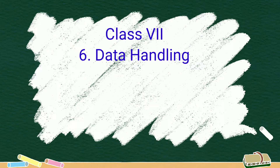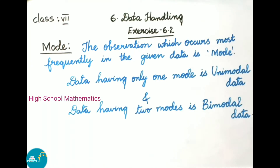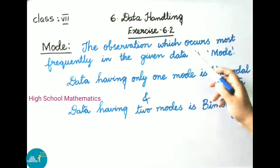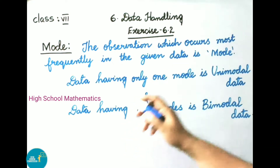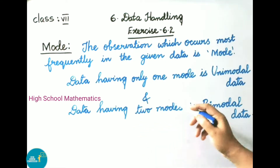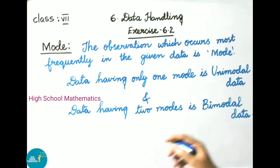Hello everyone, welcome to High School Mathematics channel. Today we are going to learn Class 7 Chapter 6: Data Handling, Exercise 6.2. First, let us see the definition of mode. The observation which occurs most frequently in the given data is called the mode. Data having only one mode is called unimodal data, and data having two modes is called bimodal data.